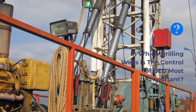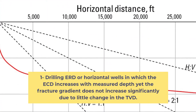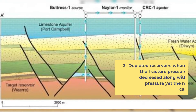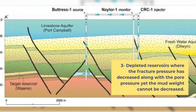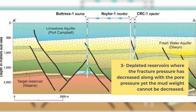In which drilling wells is the control of ECD most important? One, drilling ERD or horizontal wells in which the ECD increases with measured depth yet the fracture gradient does not increase significantly due to little change in the TVD. Two, HPHT wells where the drilling margin — the pressure difference between the pore pressure band and the fracture pressure — is low. Three, depleted reservoirs where the fracture pressure has decreased along with the pore pressure yet the mud weight cannot be decreased.